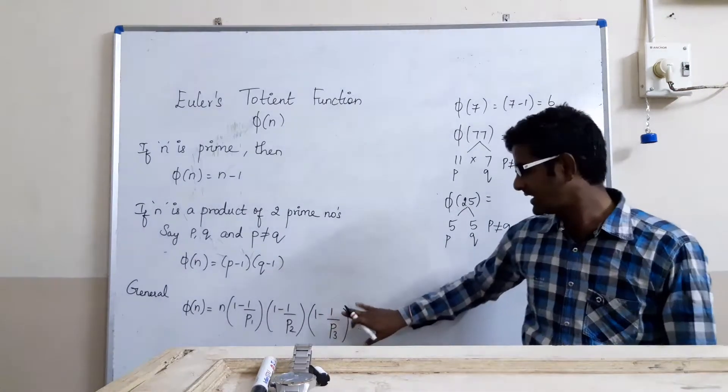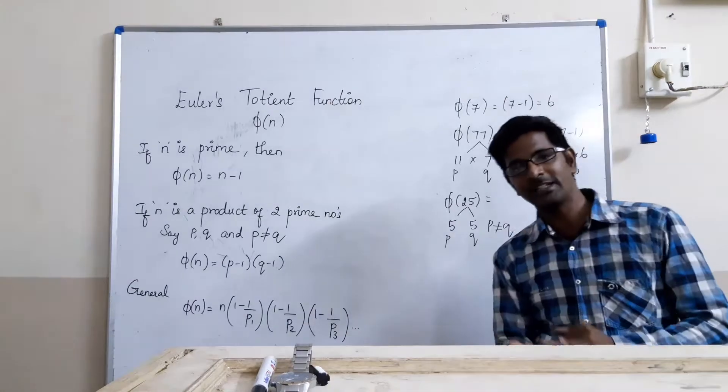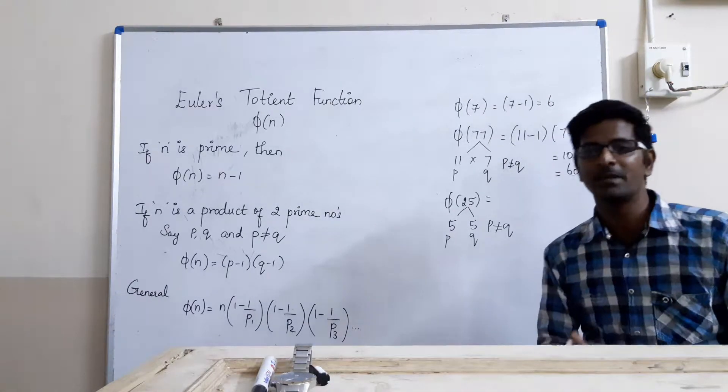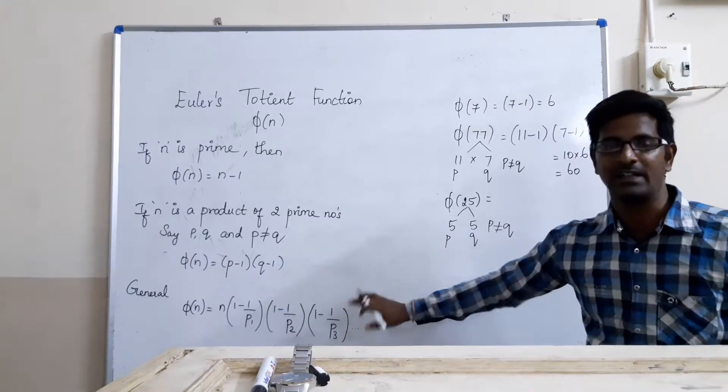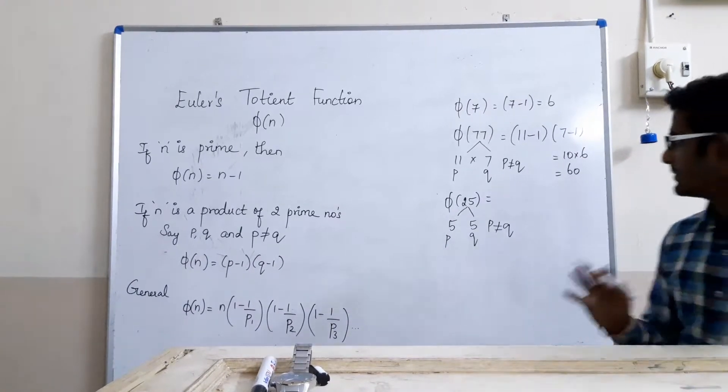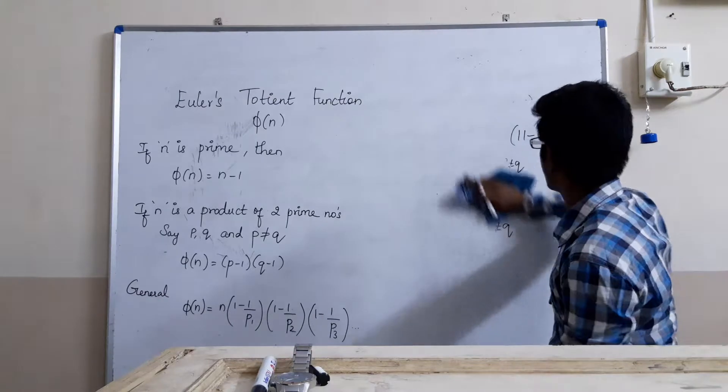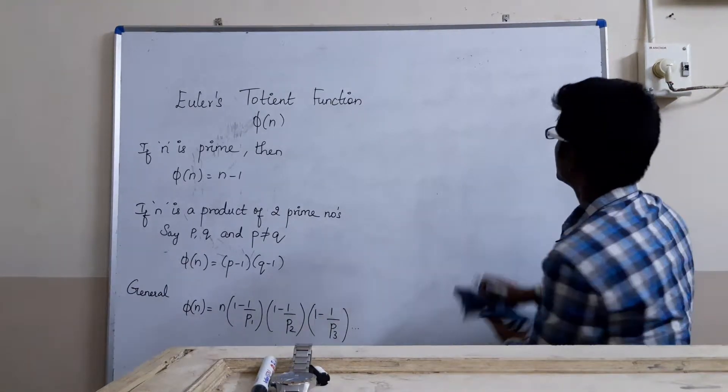If you want to solve, this is the generalized equation wherein if you apply this equation, whether p is a prime number or p is a composite number or p is not a product of two prime numbers, this one will give you the result.